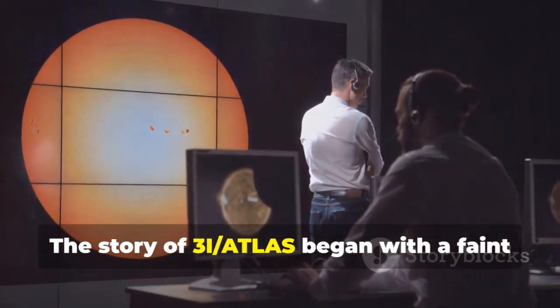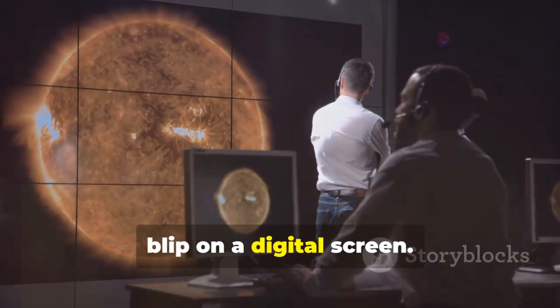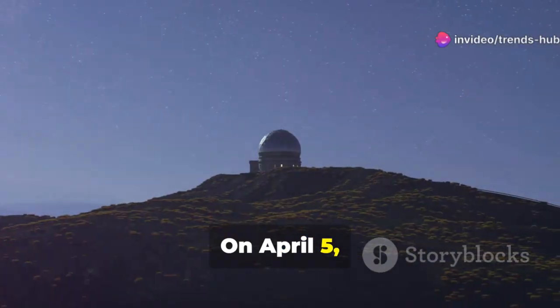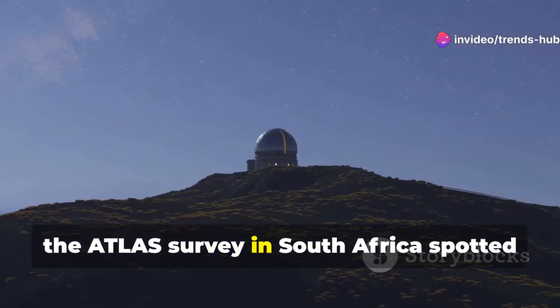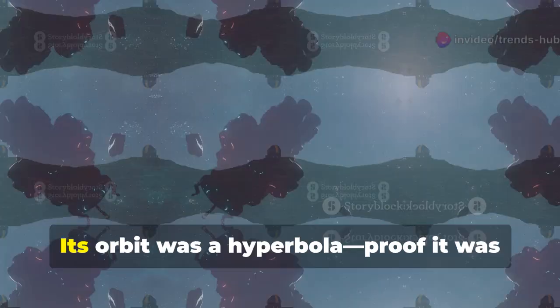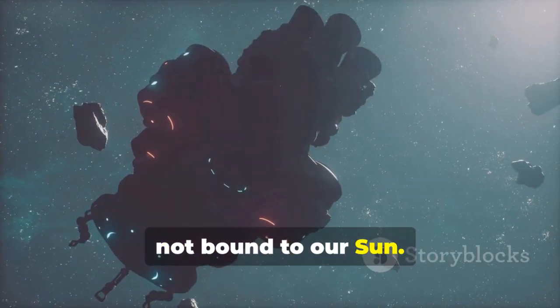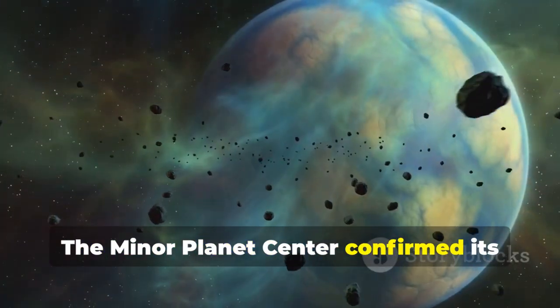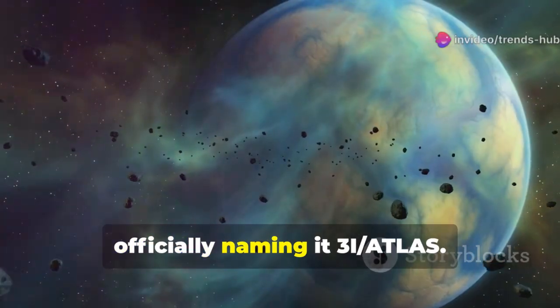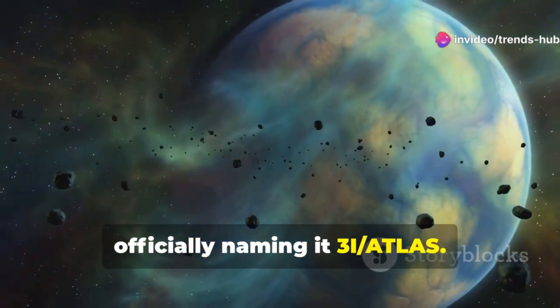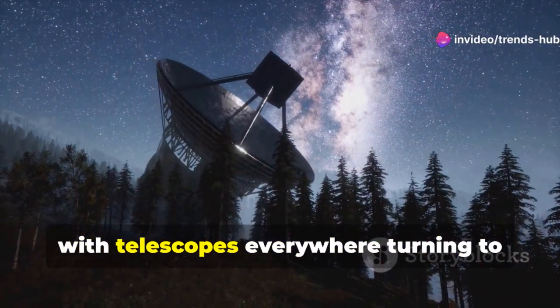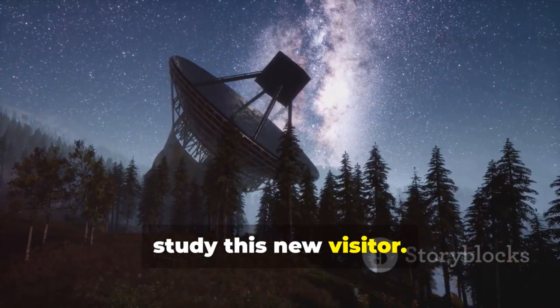The story of 3i-slash-Atlas began with a faint blip on a digital screen. On April 5th, 2025, the Atlas survey in South Africa spotted an object on an unusual path. Its orbit was a hyperbola, proof it was just passing through, not bound to our sun. The minor planet center confirmed its interstellar origin, officially naming it 3i-slash-Atlas. The discovery triggered a global campaign with telescopes everywhere turning to study this new visitor.